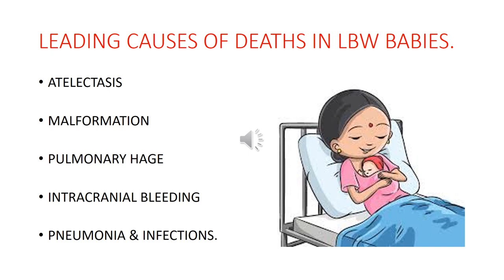Another important cause of death is intracranial hemorrhage or intracranial bleeding. If the oxygen supply in the bloodstream is less, or there is hypoxia, this can cause cerebral palsy or lead to intracranial bleeding. So intracranial bleed can lead to death. Another important cause of death is infections — the most common being pneumonia. When asked about causes of death in low birth weight babies, these are the five important causes.